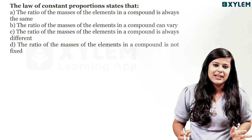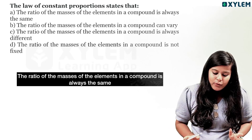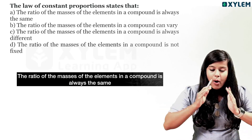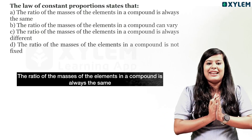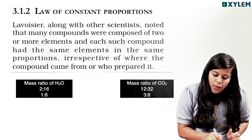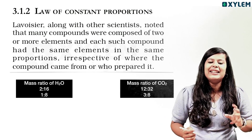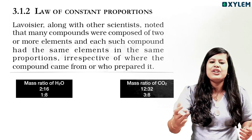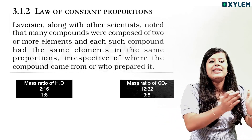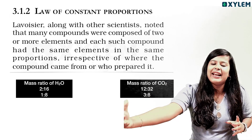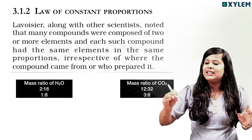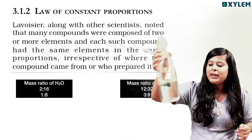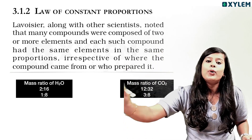The answer to this question is the law of constant proportion — the ratio of the mass of elements in a compound is always the same. If we compare this: the amount of mass in the ratio is fixed. For example, in water, a proper fixed amount is always maintained.